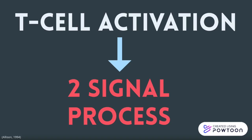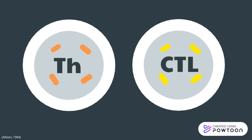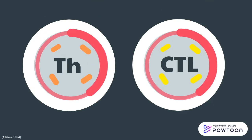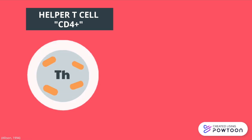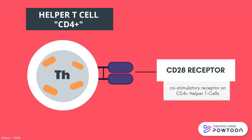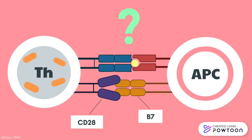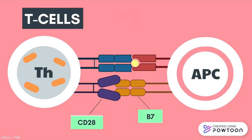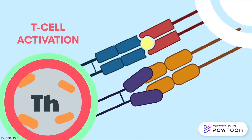In addition to TCR binding to antigen-loaded MHC, both helper and cytotoxic T-cells require secondary signals to become fully activated — a process known as co-stimulation. For helper T-cells, this second co-stimulatory signal is provided by a receptor on the T-cell's surface called CD28. CD28 binds to an important molecule on the surface of the APC called the B7 protein. This binding ensures T-cells are only activated by APCs that have actually encountered a pathogen.